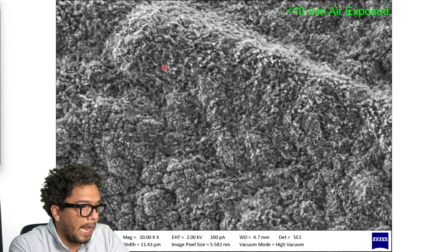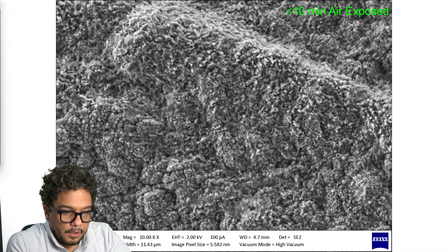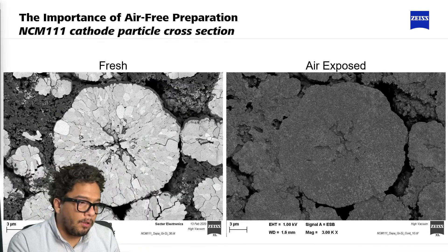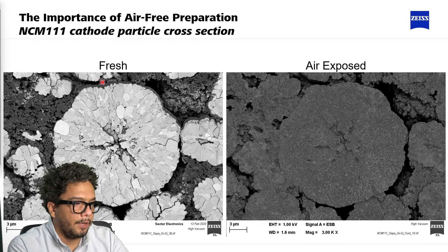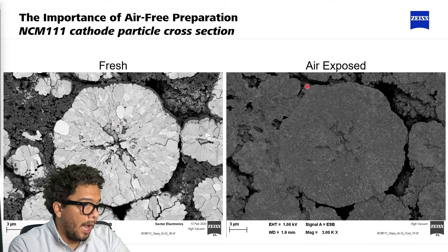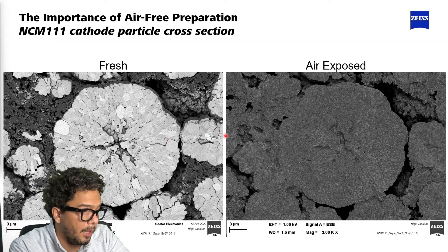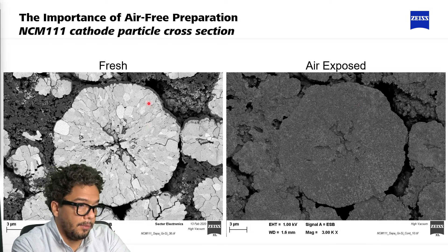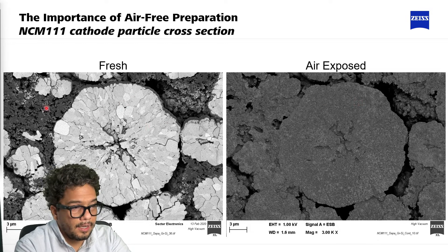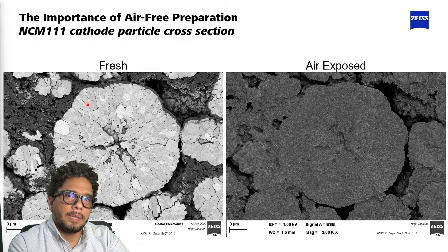This is the same example at higher magnification — of course, we are not seeing lithium here anymore. Another example, not lithium but a cathode: this is how the fresh cathode looks like, and after exposure it looks different. This looks like the same material, but the reality is we have a binder and different kinds of material here.